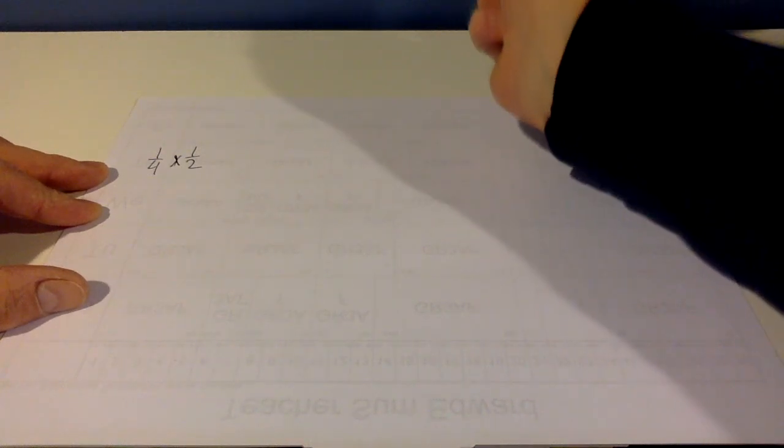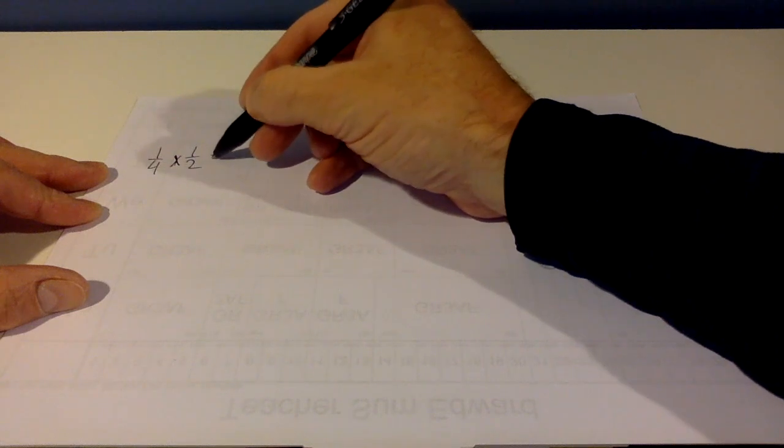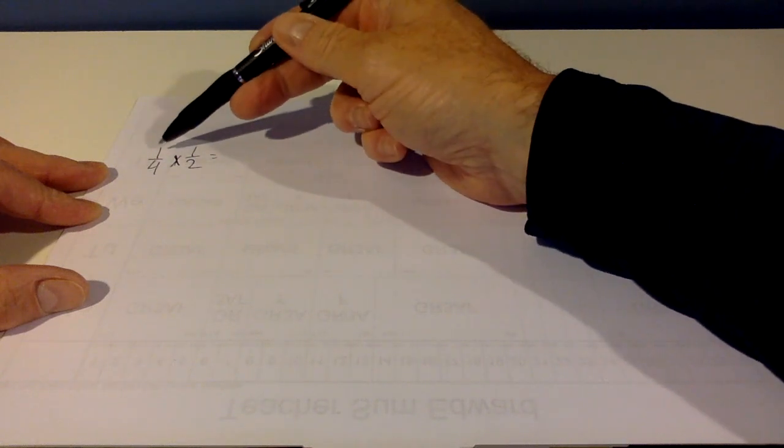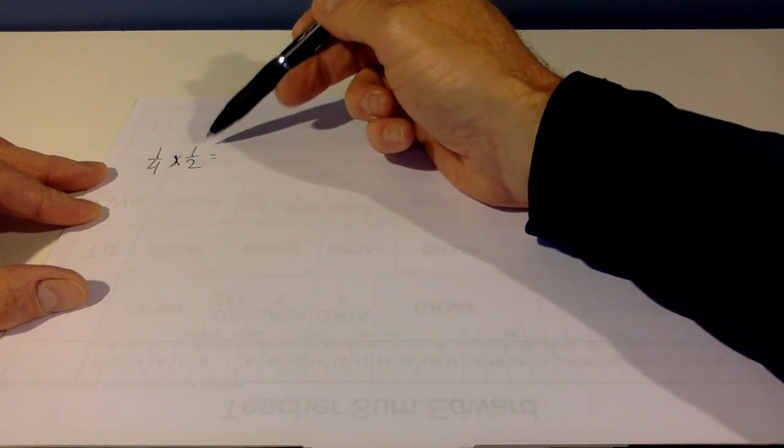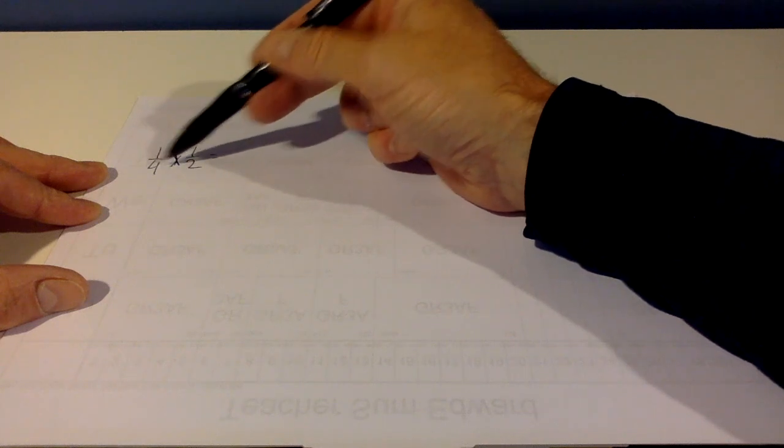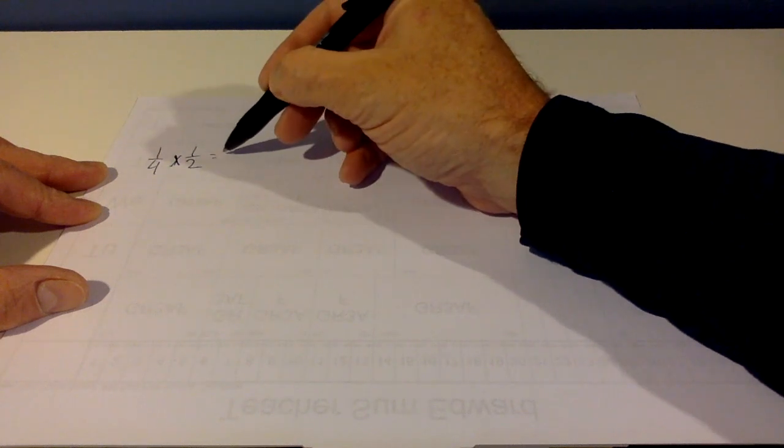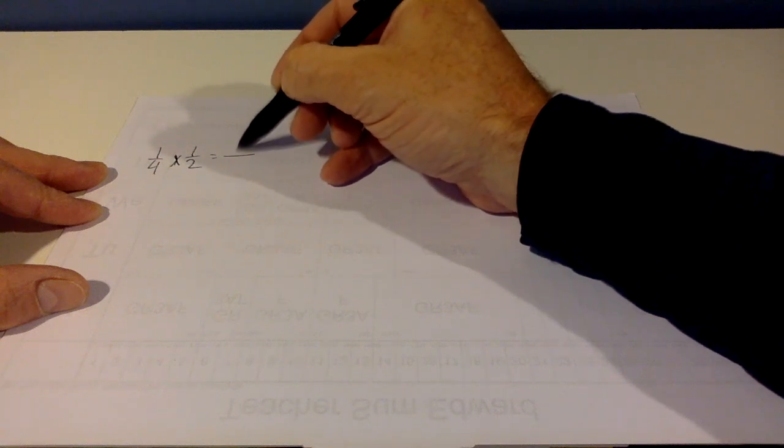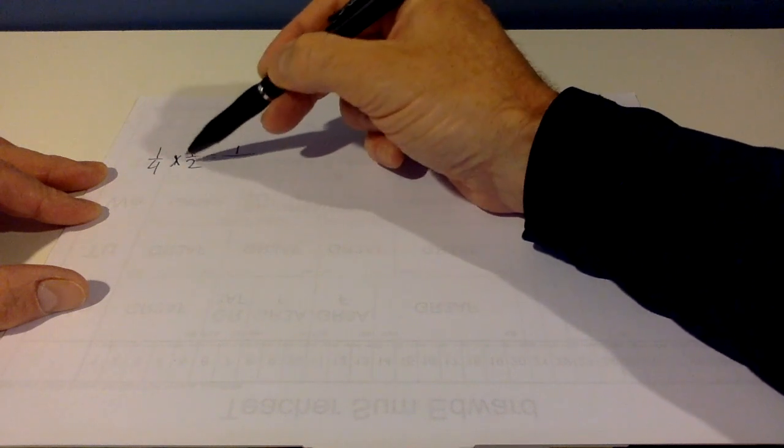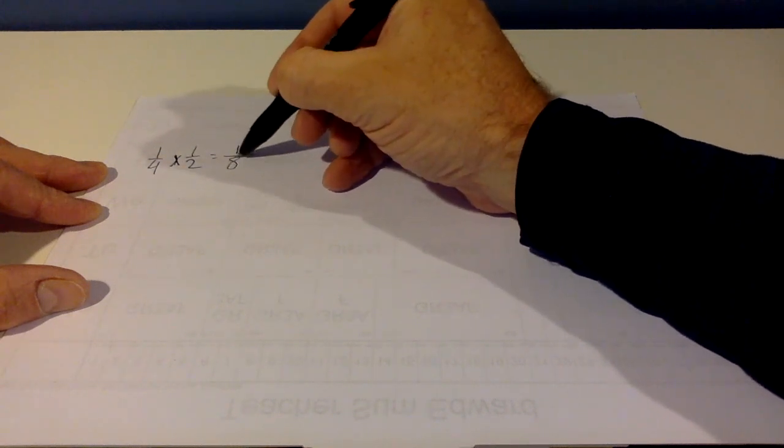Now what you do with multiplication for fractions is you go straight across. You start off with the numerator, just multiply across, and the denominator, just multiply across. So 1 times 1 is 1, 4 times 2 is 8.